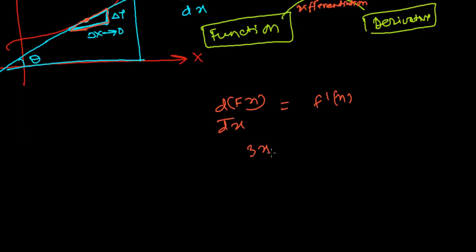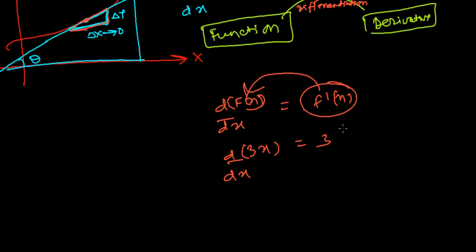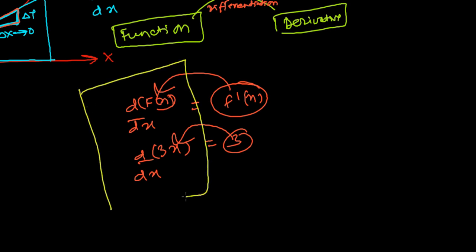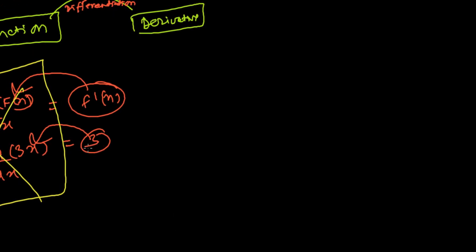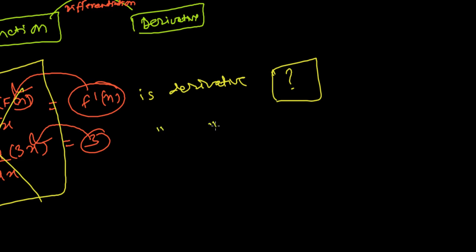Now let me think about this differently. Suppose I only know the derivative — f'(x) or, in the example, just 3 — and I don't know the original function. I'm asking: f'(x) is the derivative of what? And, 3 is the derivative of what?